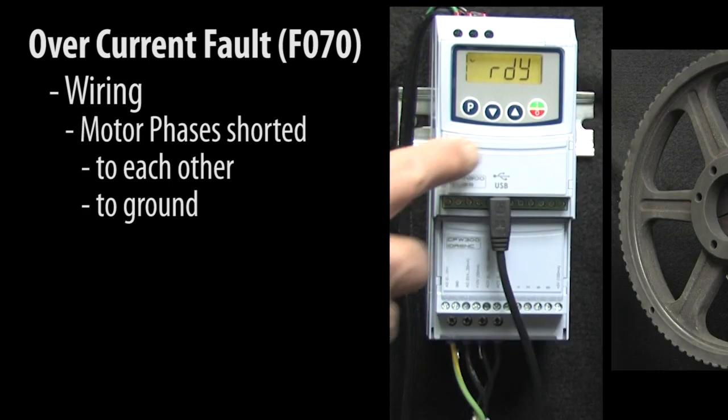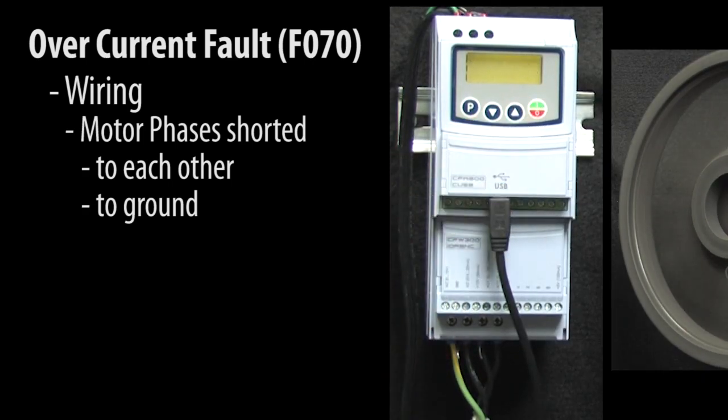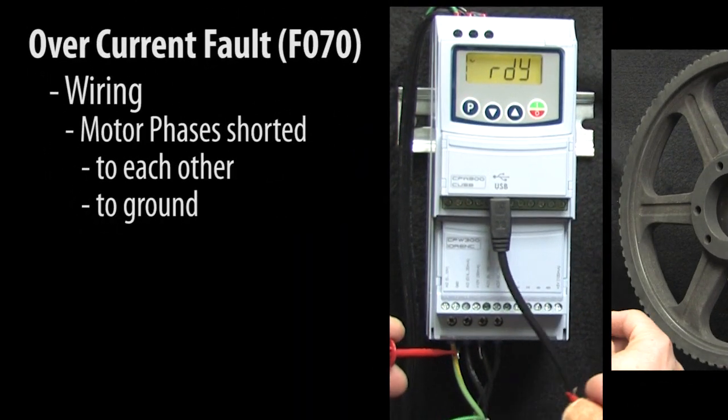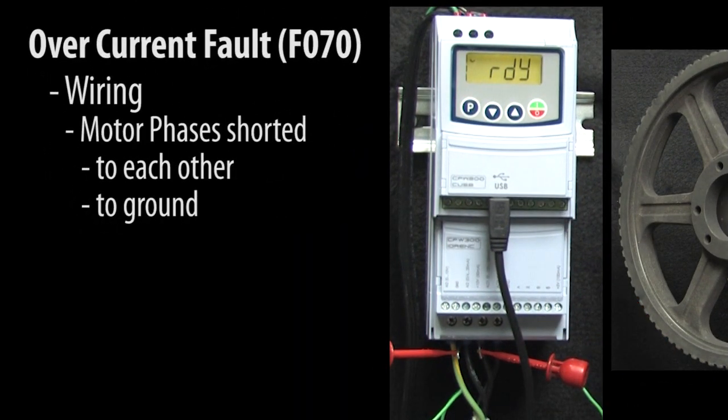For example, if I hit run, the drive spins the motor up to speed just fine. But if I use a clip lead to short two of the motor phases and then hit run, the drive sees the issue, immediately shuts down the output to prevent damage to the system and issues an overcurrent fault code.